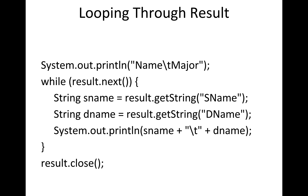Once you're at a particular row, that row might have multiple columns — first name, last name, and so on. You can say result.getString() and provide the name of the column, and it'll return the value of that particular field in that row. So you can get the department name, the student name, and then print it out.